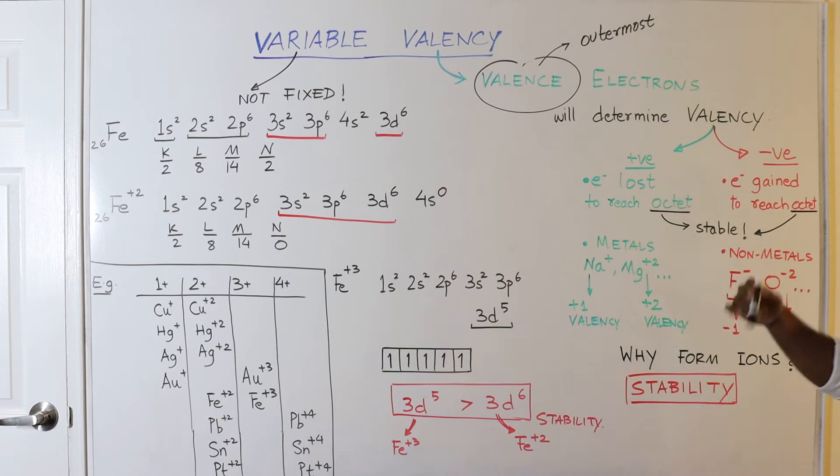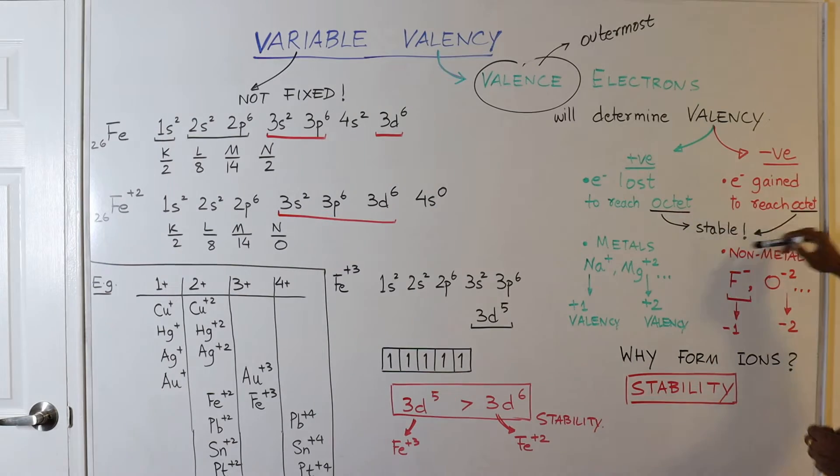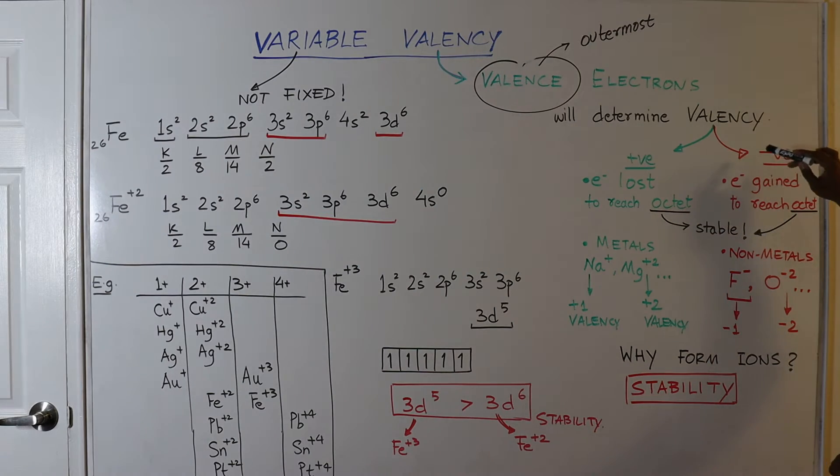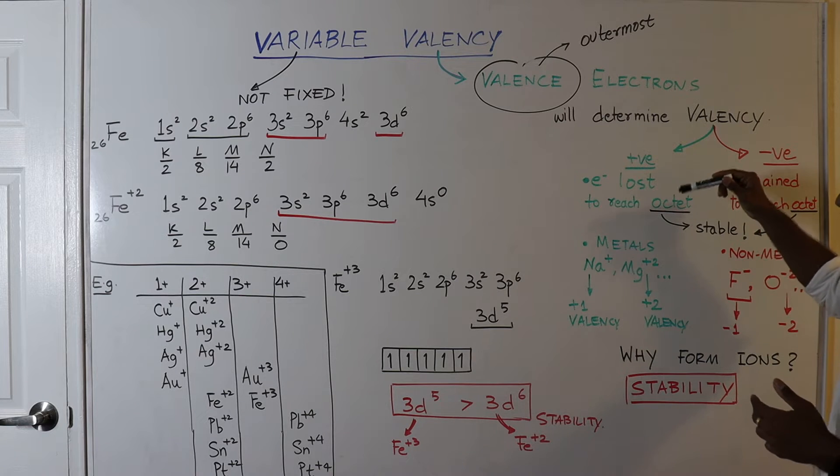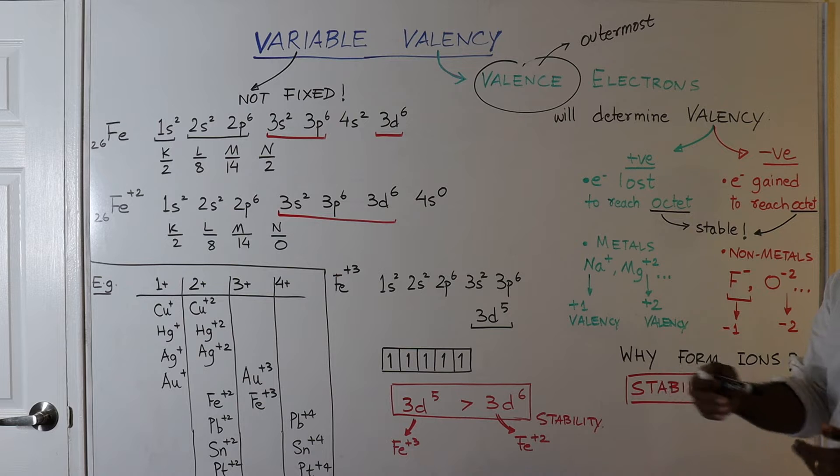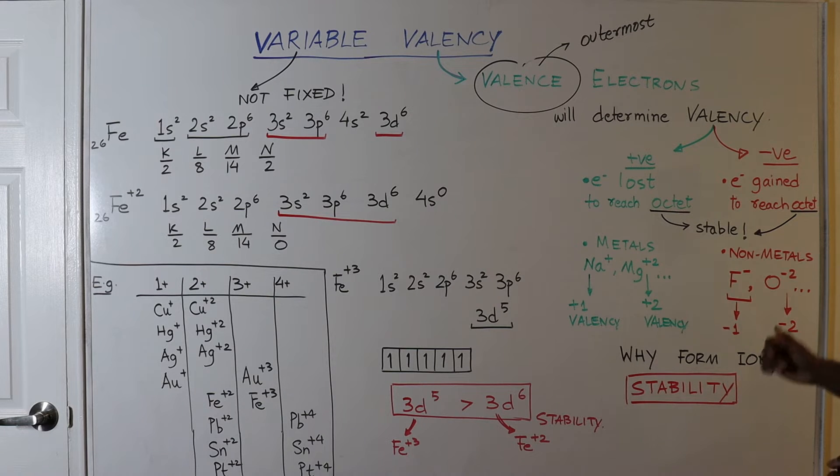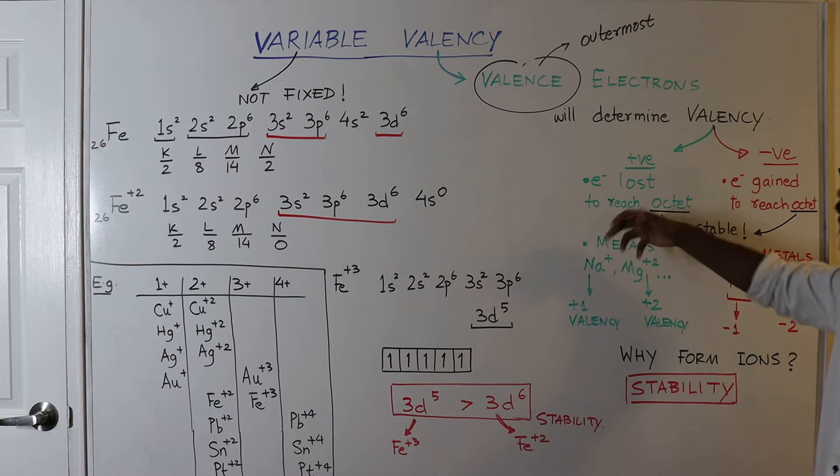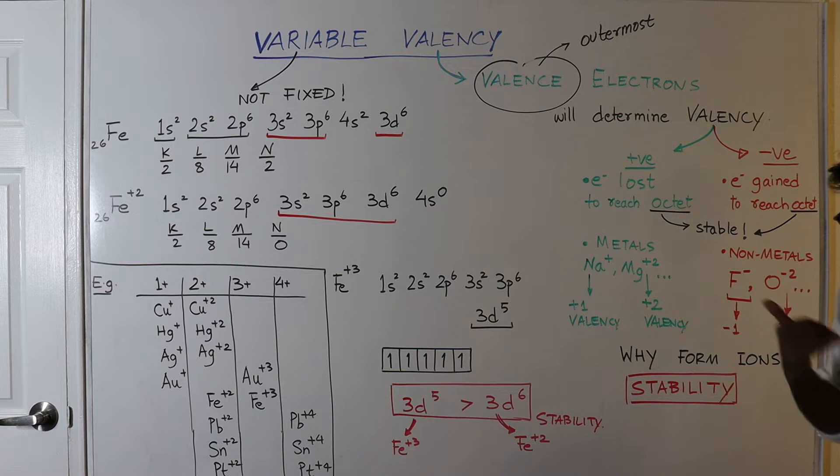So the elements, the atoms that gain electrons to reach an octet tend to form a negative charge. And the opposite, the atoms of elements that lose electrons to gain their octet tend to form a positive charge on them. Now generally metals lose electrons to gain octet and nonmetals gain electrons to reach an octet.